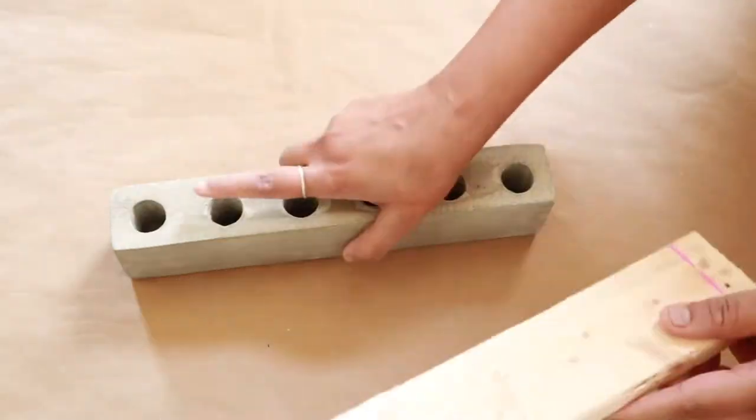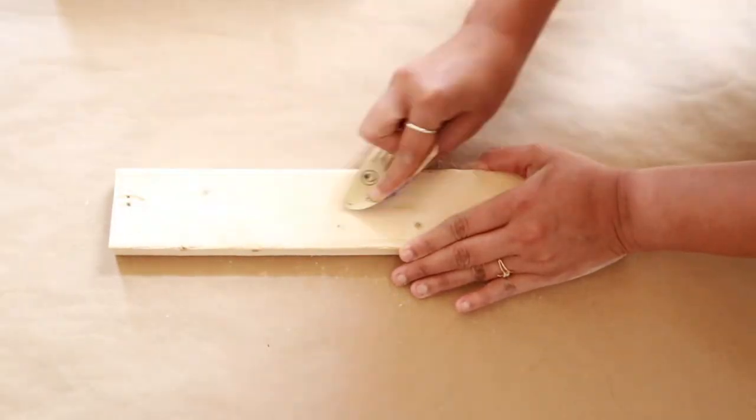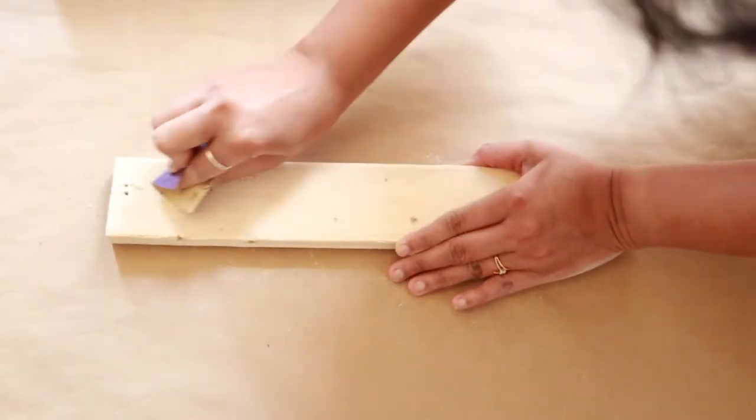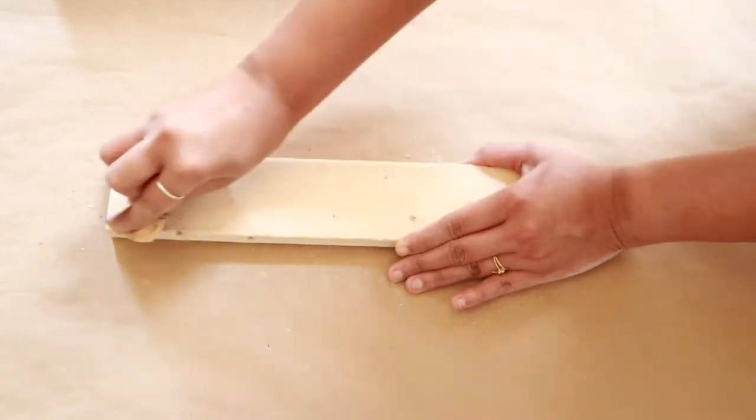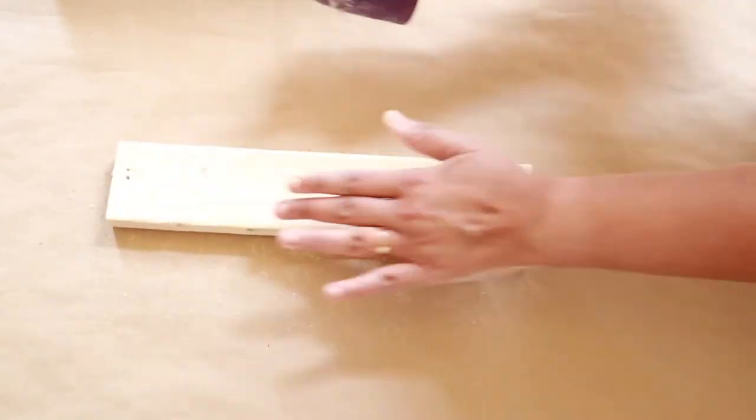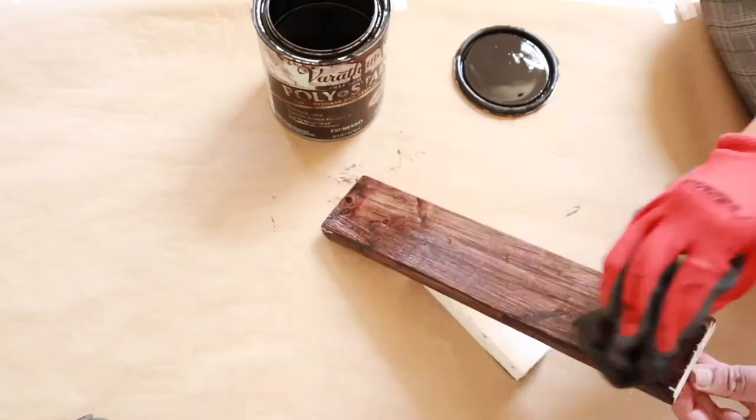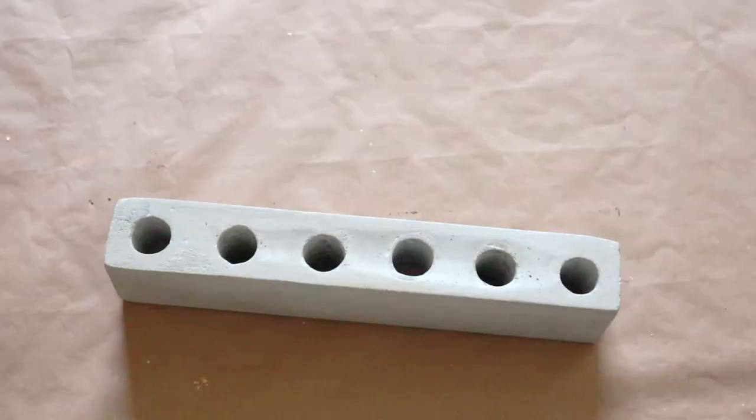I had this wood piece from my other project. I'm going to use this as kind of a base or foundation for my candle holder. After sanding the wood piece, I stained it with black wood stain to bring out the contrast with the cement candle holder.